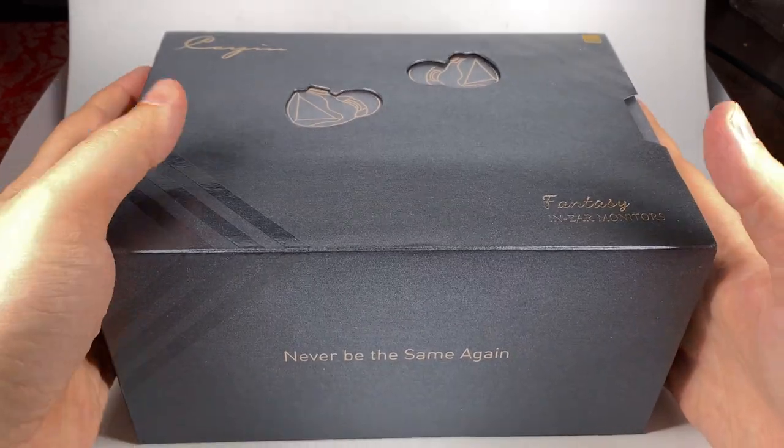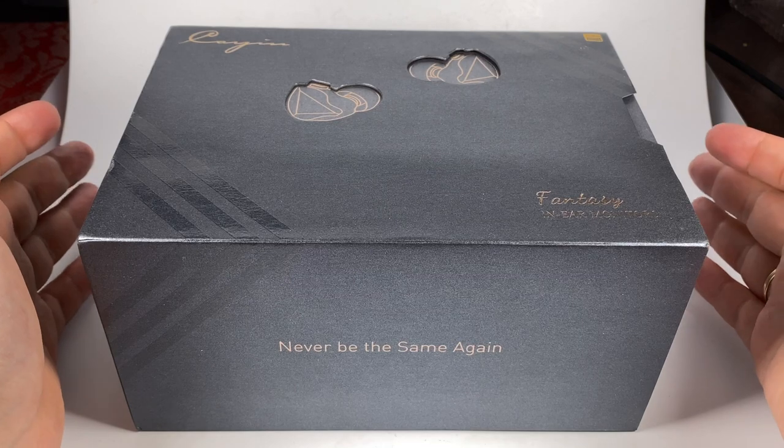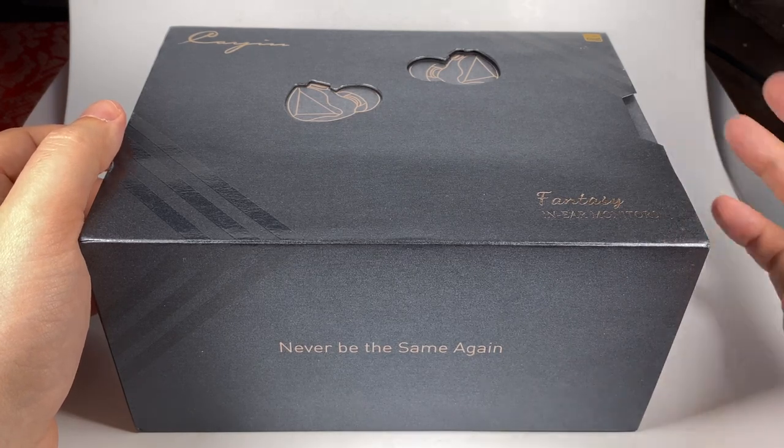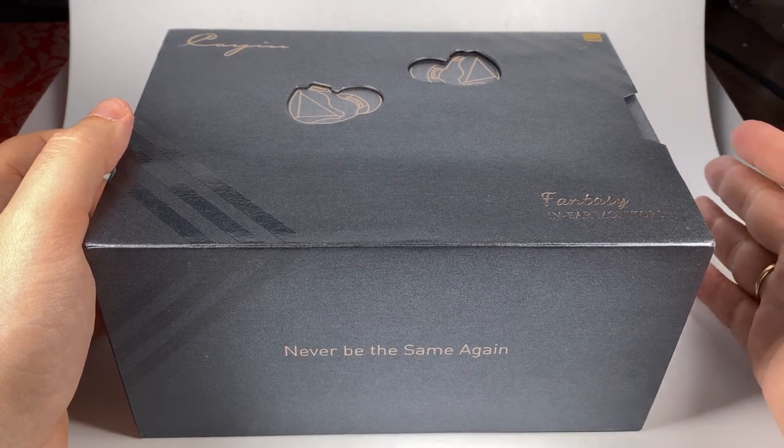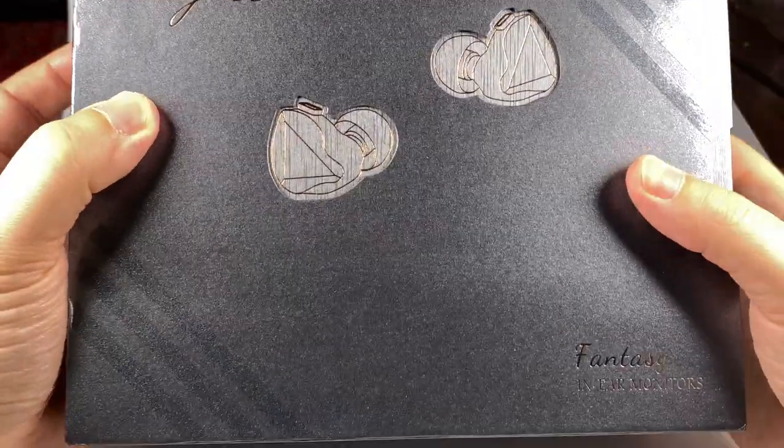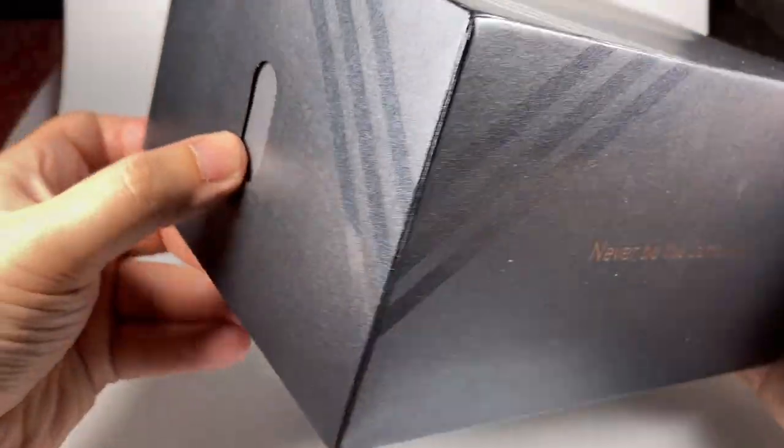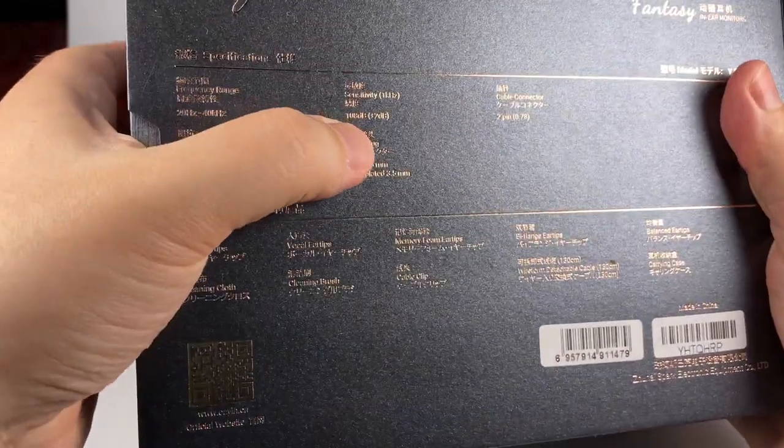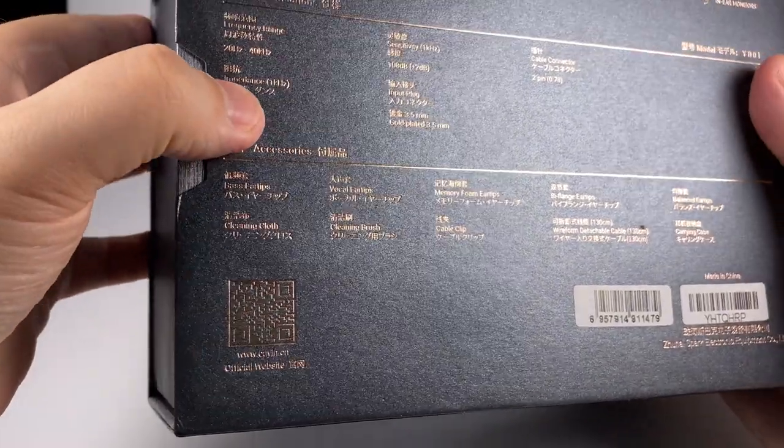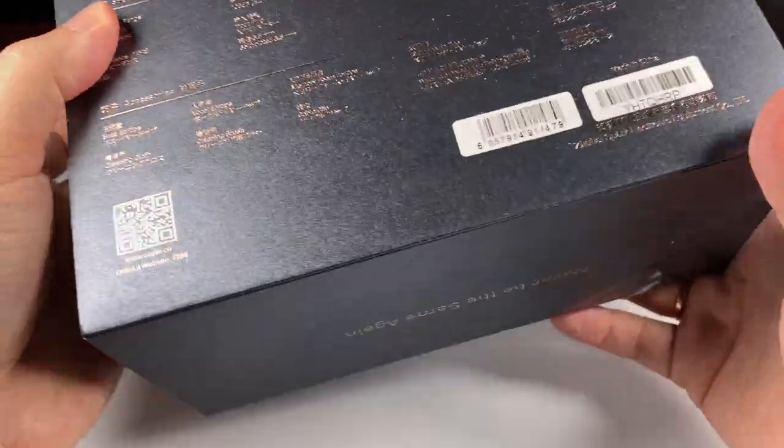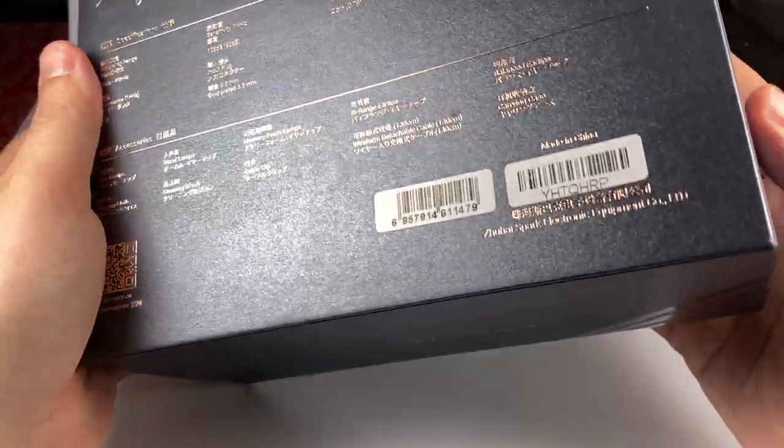The package is nice. When you're creating earphones with a price approaching $800, especially when you want to be in that wave of single dynamic driver models returning, you need to implement something in terms of design. You can see an interesting gray multi-layered box with cuts showing the inner box, even a hole to simplify opening. On the back side there are technical specifications: 108 decibels of sensitivity and 37 ohms of impedance, 2-pin 0.78 connector. The accessory set is described here, though those gold embossed letters are not easy to read.